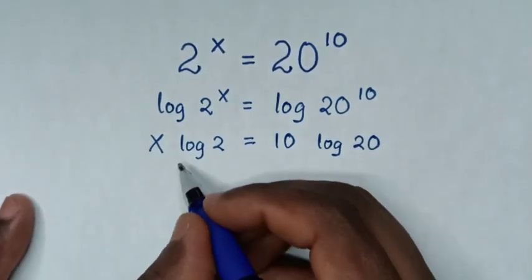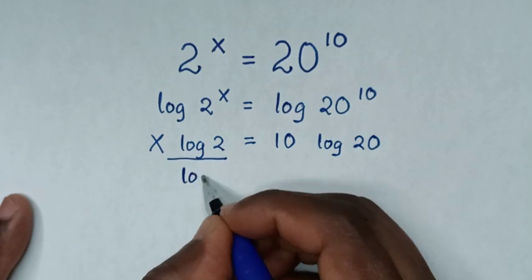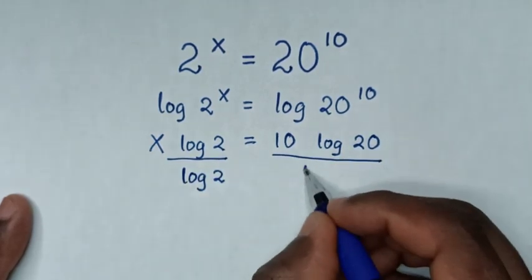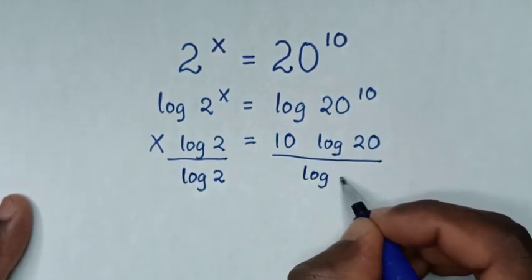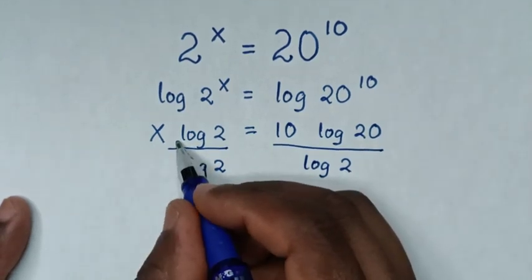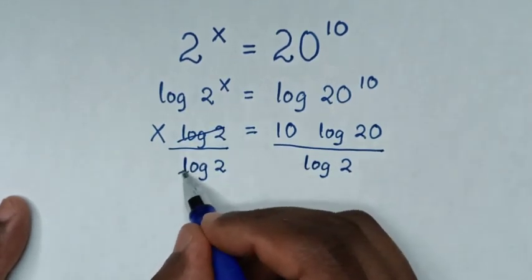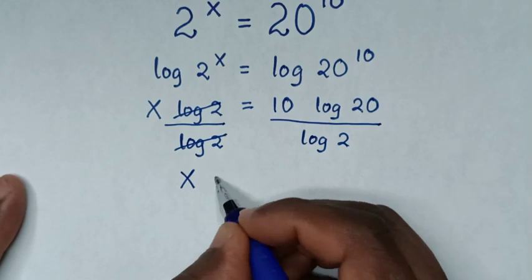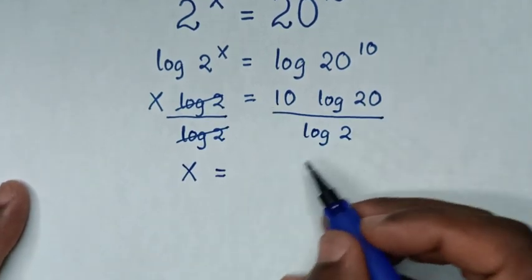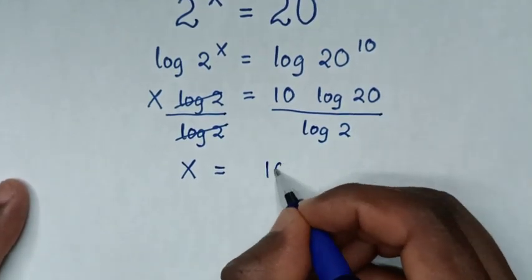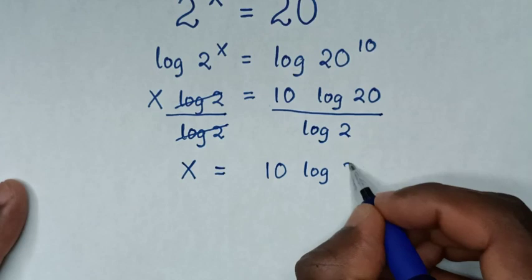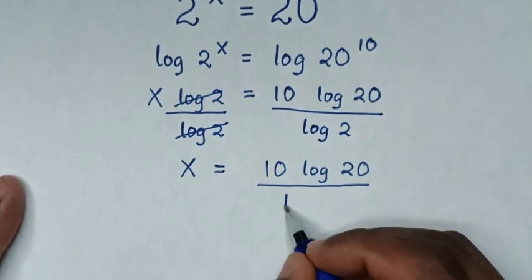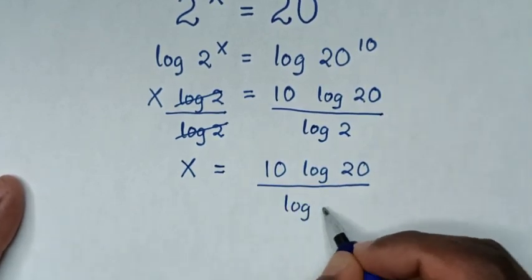Then we'll divide by log of 2 on both sides. Then log of 2 will cancel with log of 2, so it will be x is equal to — in the numerator it is 10 log of 20, then over log of 2.